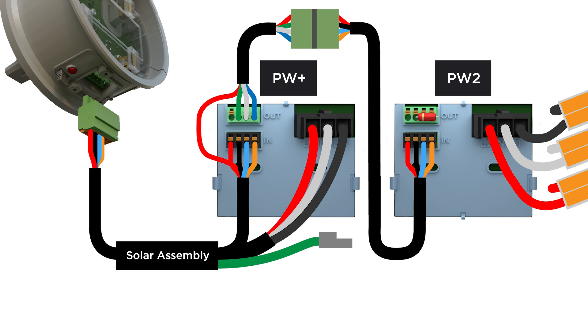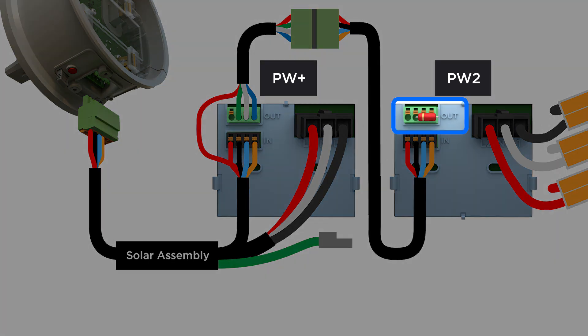Continue this pattern of out to in for each additional Powerwall 2. Install the end-of-line resistor in the out port of the last Powerwall 2.